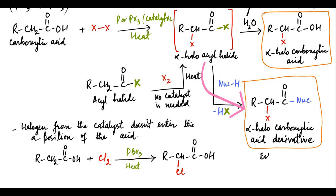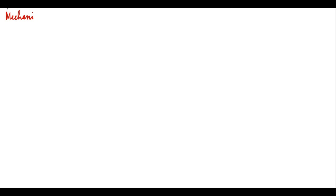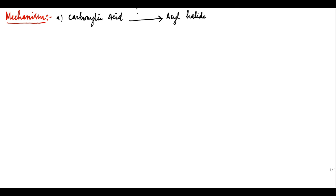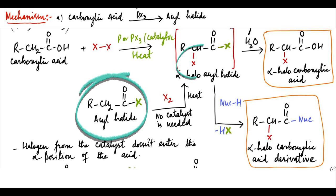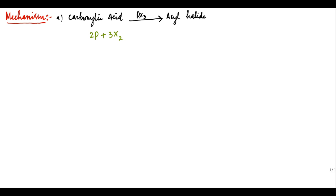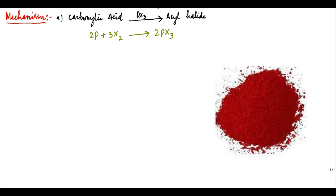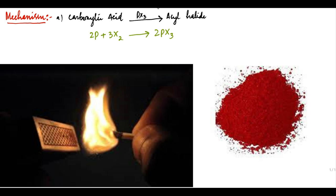The mechanism consists of two parts. The first part is conversion of carboxylic acid into acyl halide in the presence of PX3. Since acyl halides undergo halogenation without a catalyst, it is considered that red phosphorus and halogen first form phosphorus trihalide. Red phosphorus is reasonably air-stable unless provoked, such as when it is dragged across a rough surface, making it useful for applications like match heads.